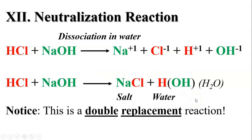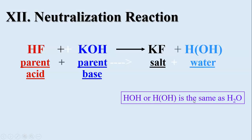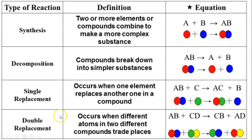Acid plus base will always yield salt plus water — just do that double replacement reaction every time. For example, hydrofluoric acid plus potassium hydroxide: the potassium and fluorine bond to form potassium fluoride (a salt), and H and OH bond to form water. Sometimes it's easier to leave it as HOH for balancing purposes.